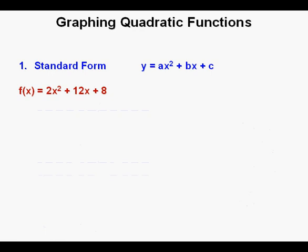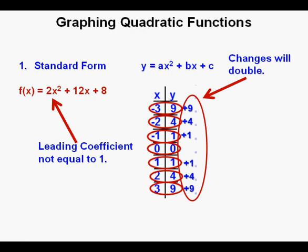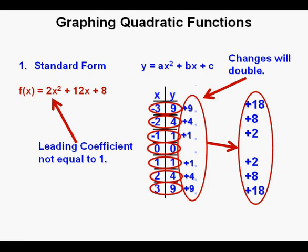What if we have f of x equals 2x squared plus 12x plus 8? The pattern from the parent function is based on a leading coefficient of 1. But this leading coefficient is 2, so that changes the pattern — it doubles all the changes. So instead of increasing by 1, 4, 9, and 16 from the vertex, they will increase by 2, 8, 18, and 32. So 1 away from the vertex is plus 2, 2 away is plus 8, 3 away is plus 18, and 4 away would be plus 32.